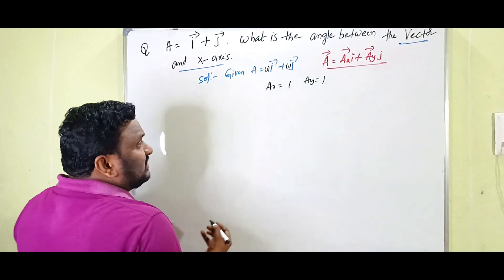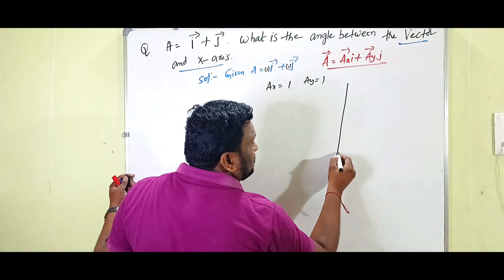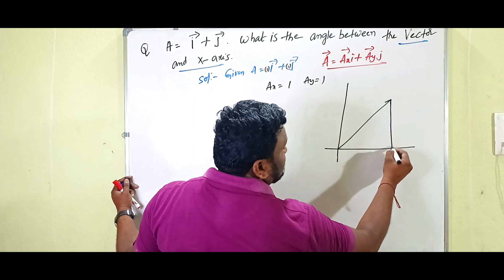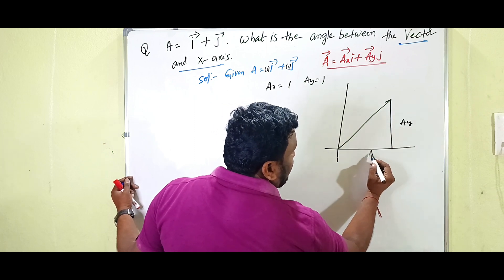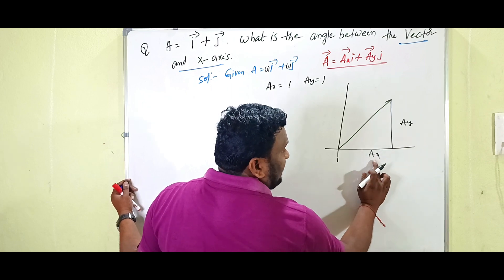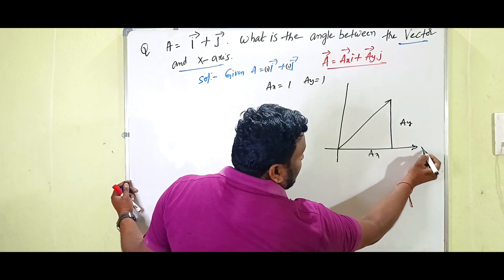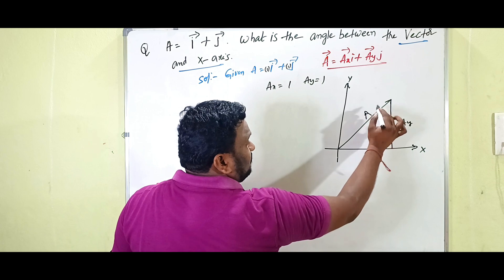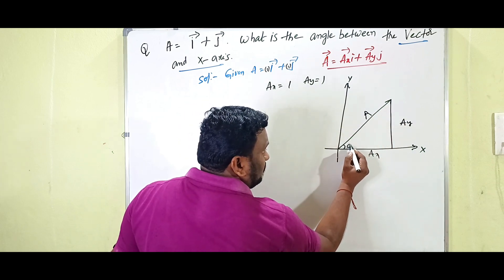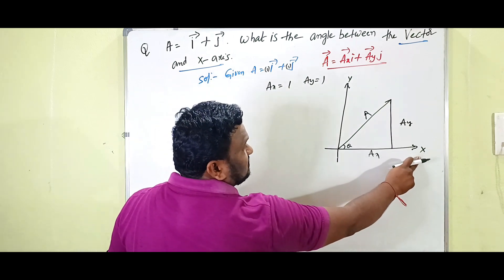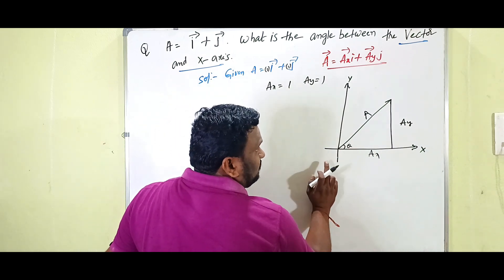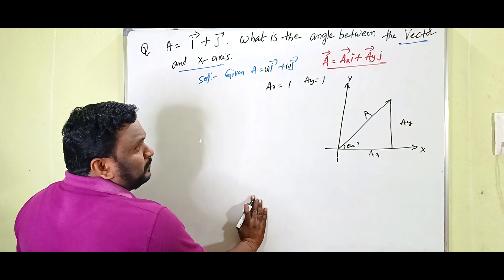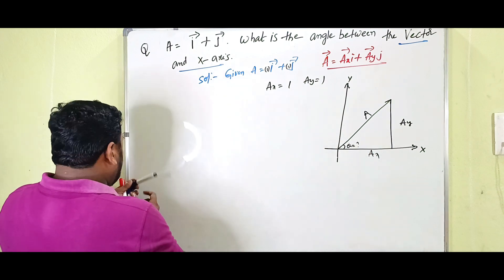According to the resolution of vectors, vector A is divided into two components. ay is the vertical component and ax is the horizontal component. The x-axis is horizontal and the y-axis is vertical. Vector A makes some angle theta with the x-axis, and we have to find that particular angle.